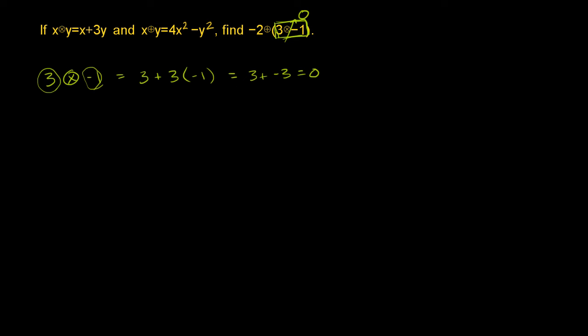So our entire expression simplifies to negative 2 circle plus 0. Now we can use this definition: x circle plus y equals 4x squared minus y squared.